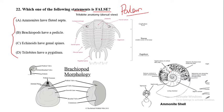Looking at the first option: ammonites have floated septa. In the image, you can see the septal wall, septal sutures, and septal chambers of the ammonite shell. So ammonites do have floated septa — this is the correct, true statement.